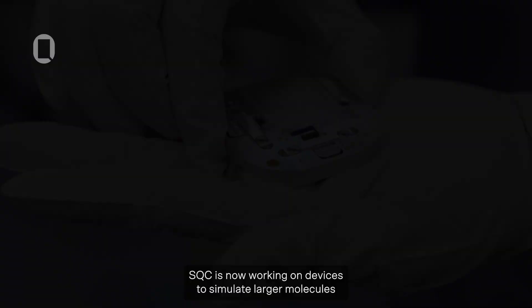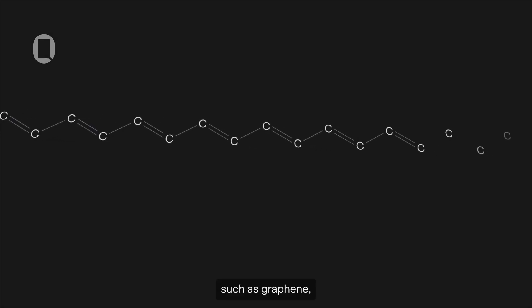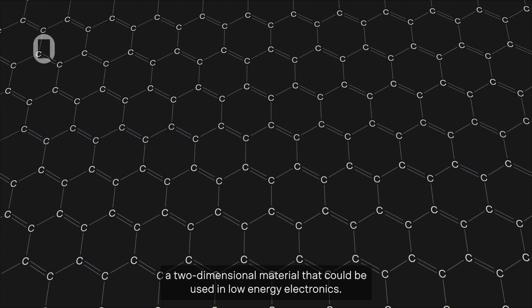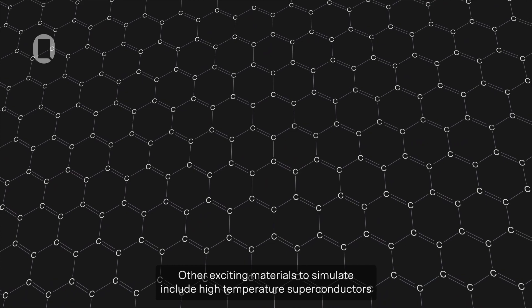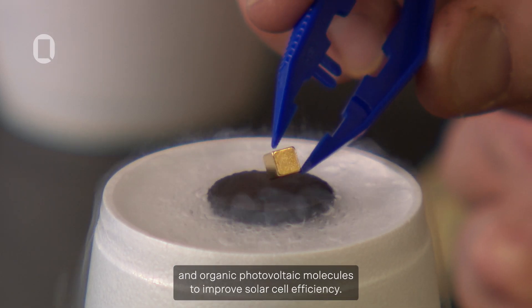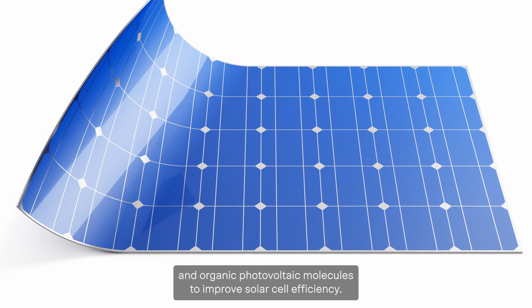SQC is now working on devices to simulate larger molecules, such as graphene, a two-dimensional material that could be used in low-energy electronics. Other exciting materials to simulate include high-temperature superconductors and organic photovoltaic molecules to improve solar cell efficiency.